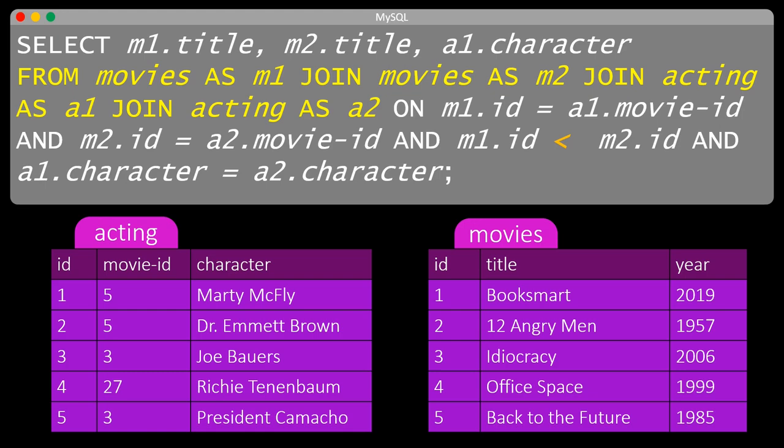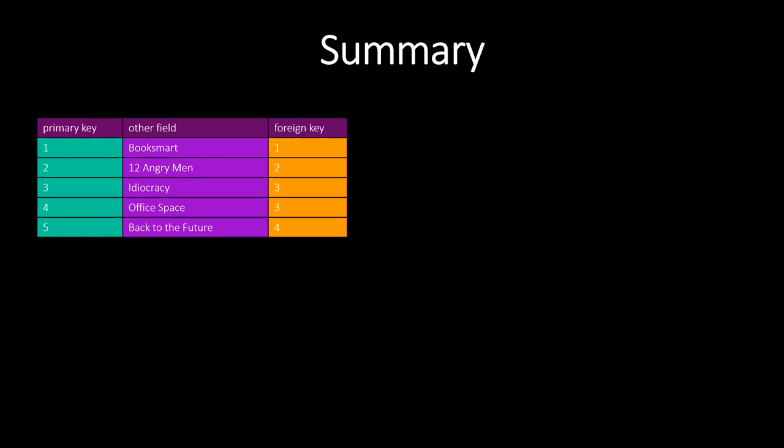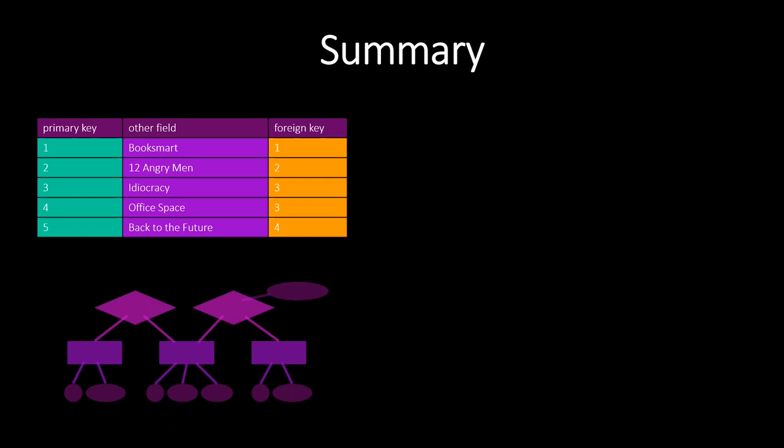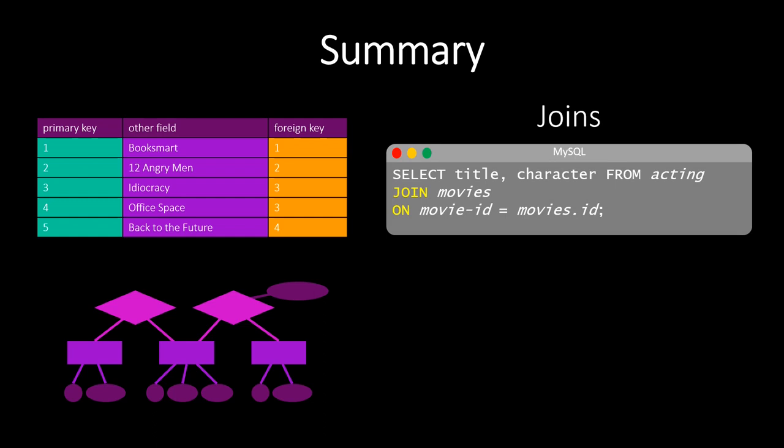In this video, we discussed how to deal with databases that consist of multiple tables. First, we motivated why multiple tables are better, then we introduced the concepts of primary key and foreign key. Then we talked about ER diagrams. In the second part of the video, we studied how to query multiple tables by using joins, and we discussed the different types of joins.